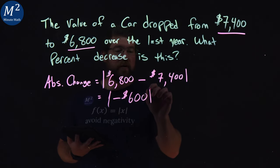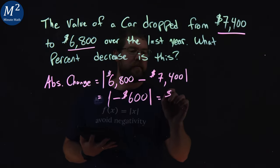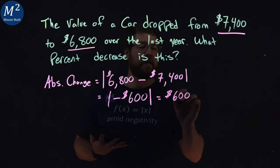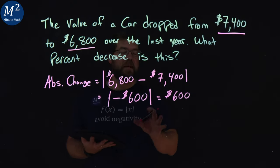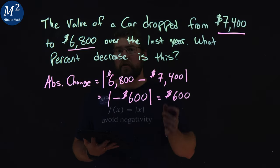But we're taking the absolute value of that, which makes it a positive $600. So we've got absolute change of $600 between the beginning and end value here.